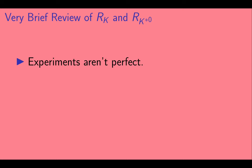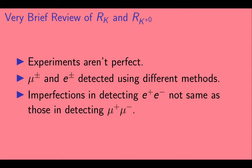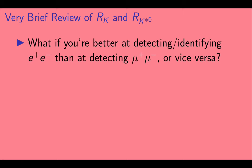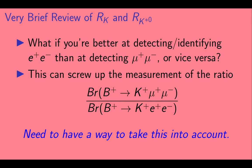But experiments aren't perfect, and muons and electrons are detected using different methods. This leads to an inconvenient issue. Imperfections in detecting an E plus E minus pair are not the same as the imperfections in detecting a mu plus mu minus pair. So what happens if you're better at detecting and identifying E plus E minus than at detecting and identifying mu plus mu minus, or vice versa? This can screw up the measurement of this ratio of branching fractions that we just wrote down. So there needs to be a way to take this into account.